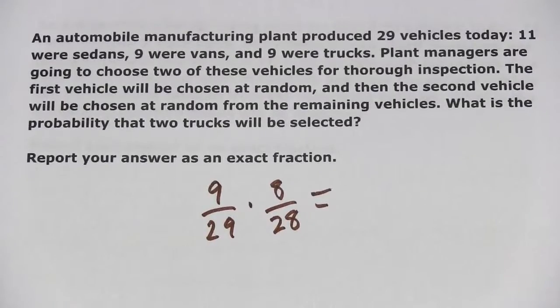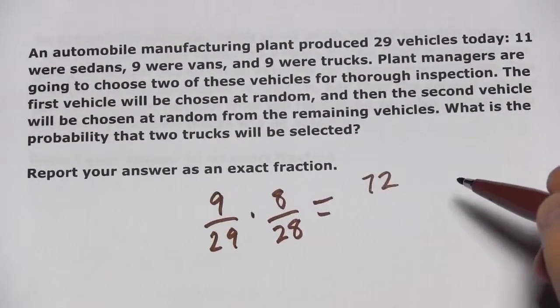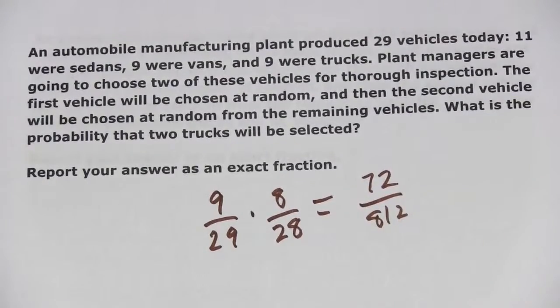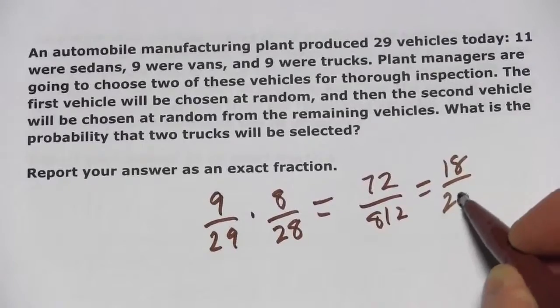And then we multiply those together, and that is 72 and 812, and how can we simplify that? Looks like that comes down to 18 out of 203. So, that's a little bit of work with dependent events.